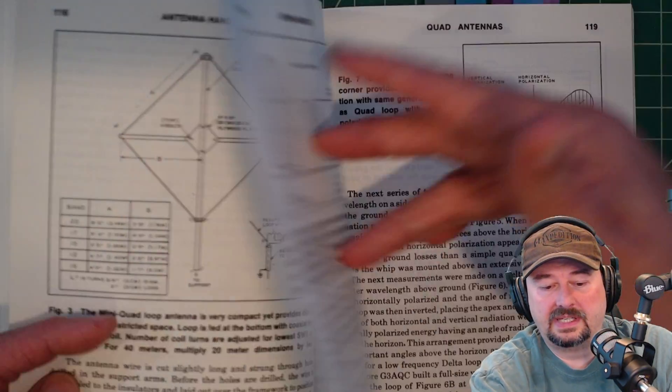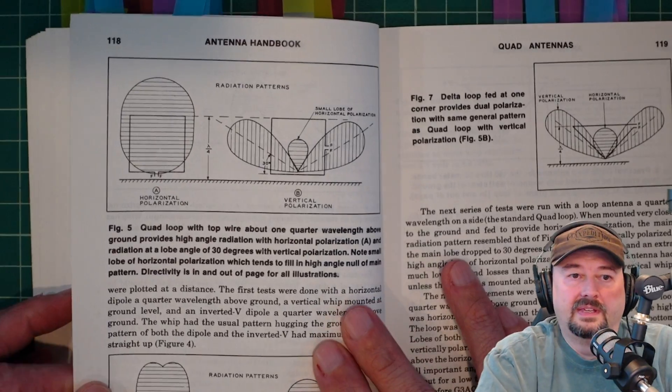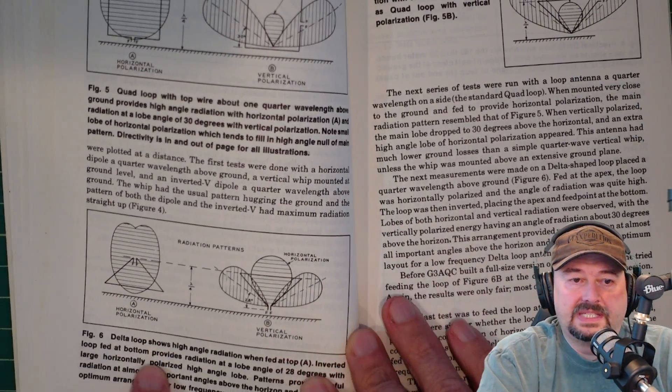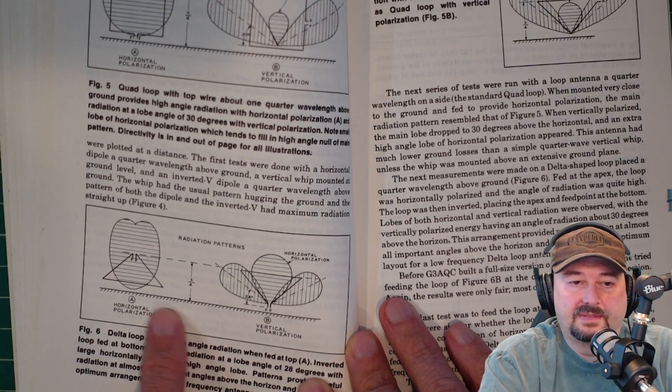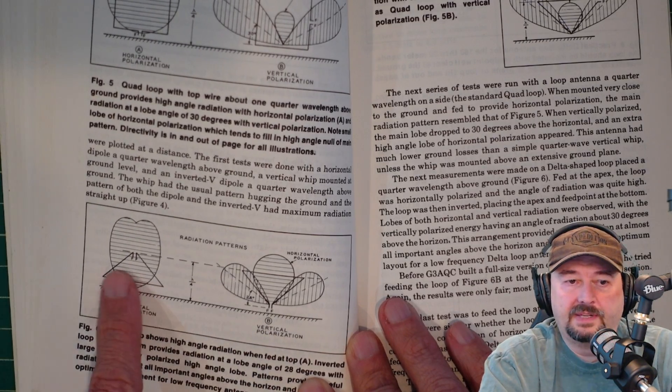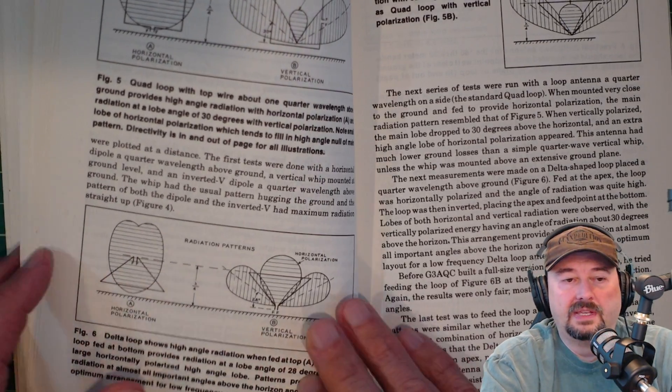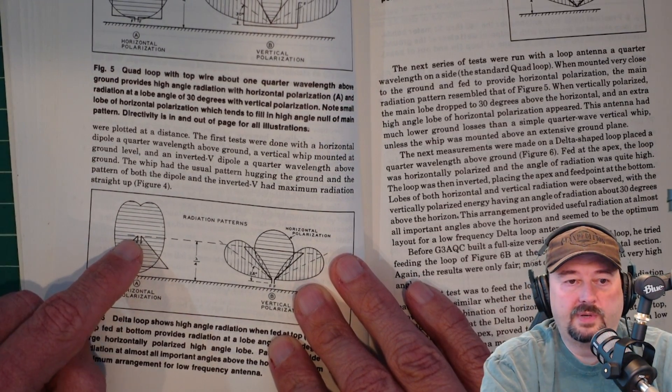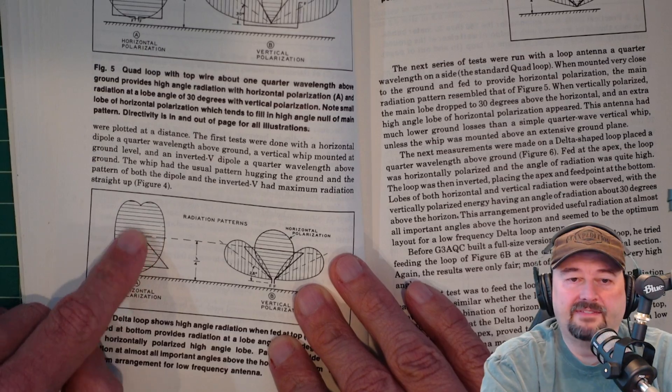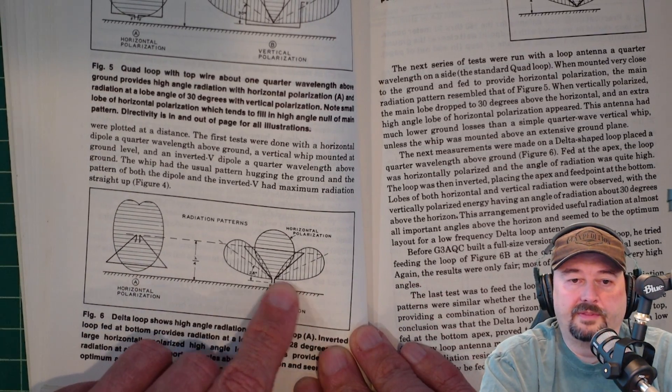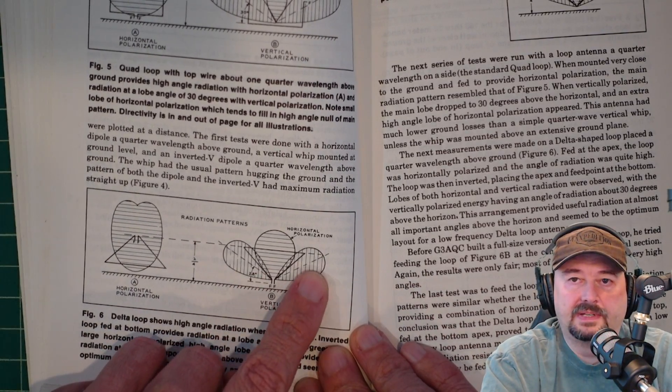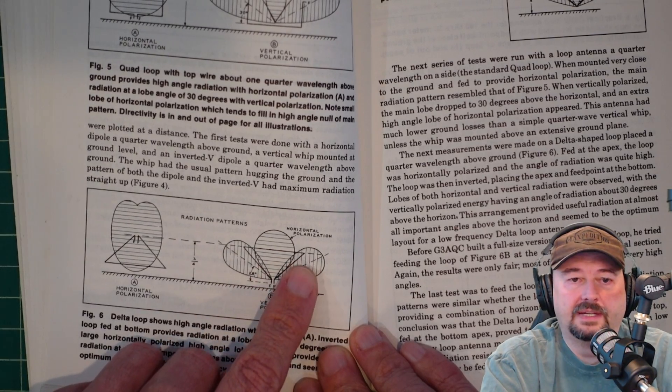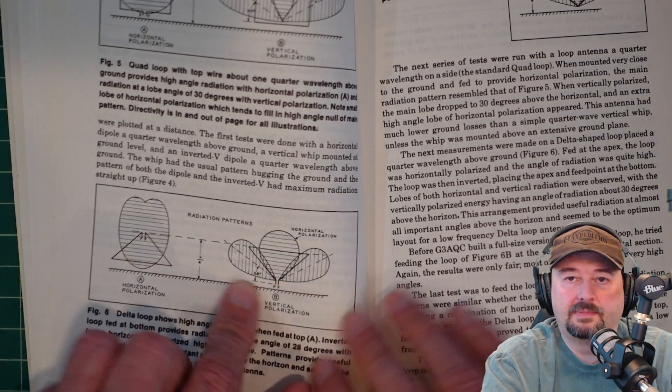And there's one here that I found pretty interesting. So, with this, you can see these are called delta loop antennas. This one has the point at the top, this one has the point at the bottom, the feed point at the top, and the feed point at the bottom. So, you can see that a delta loop with a feed point at the top is probably a pretty good NVIS antenna. With the feed point at the bottom, this is probably something that you would want to use for regional, I'm sorry, for DX type communications.